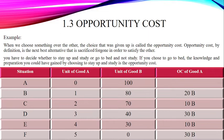Looking at the opportunity cost column for good A: when we were spending nothing on good A and getting all output as good B, there is no opportunity cost. But when we decide to produce one unit of good A, we have to deduct 20 units from total production of good B — so those 20 units become the opportunity cost of good A. As we move through situations C, D, E, and F, the deductions from total production of good B represent the opportunity cost of producing each additional unit of good A.